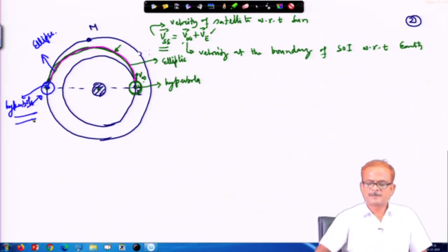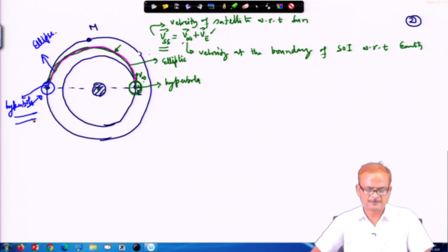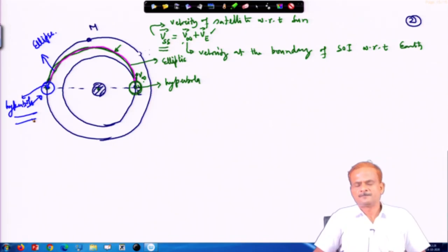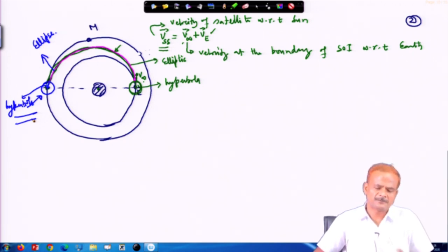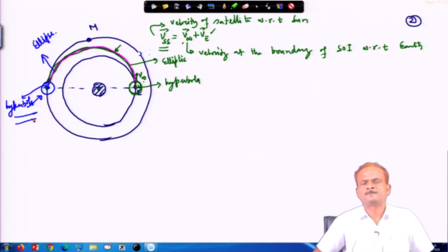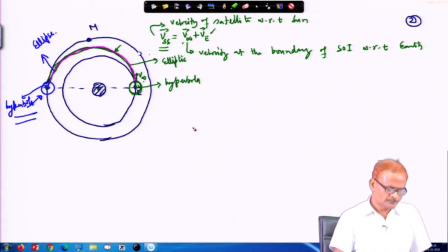For this reason this is called the patched conic section method, because you are trying to patch elliptical and hyperbolic orbits. By giving one elliptical orbit condition you cannot go to another planet — you have to escape the gravity of the earth, and for escaping a minimum parabolic orbit is required. But if you do a parabolic orbit you will not get the necessary velocity required to go to Mars, and therefore it is sent in a hyperbolic orbit.